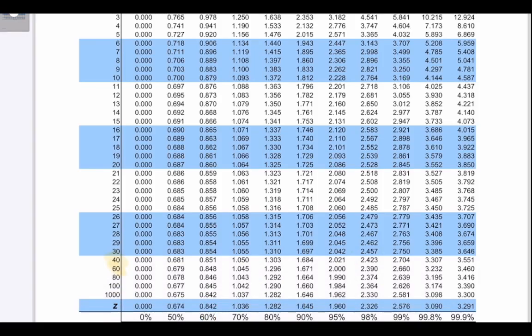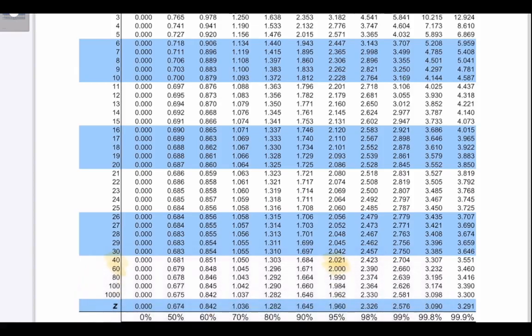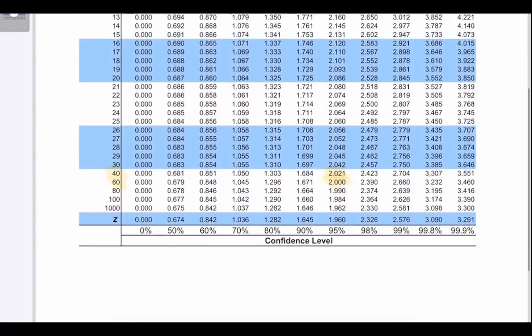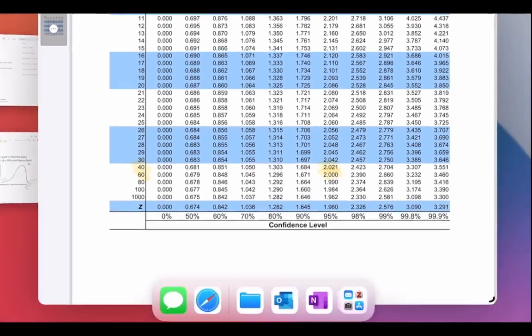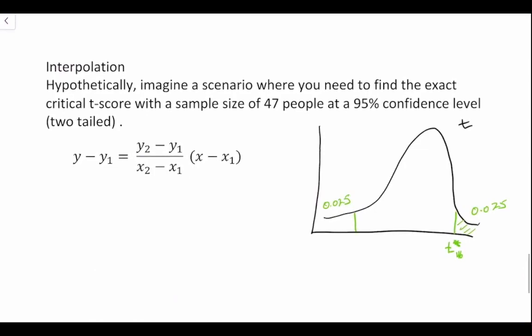The values that we have at 40 and 60 degrees of freedom are those values right there at our 95% two-tailed confidence interval. So we get 2.021 at 40 degrees of freedom, and t is equal to 2.00 at 60 degrees of freedom.